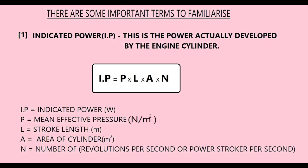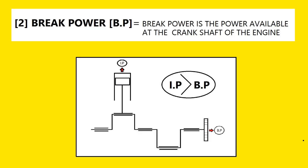There are some important terms to familiarize. Indicated power — this is the power actually developed by the engine cylinder. Brake power — brake power is the power available at the crankshaft of the engine.